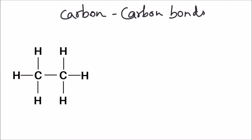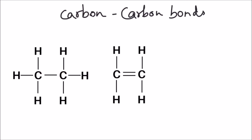In catenation, carbon-carbon bonds can be formed by a single bond, where one electron is shared between the two carbons, or a double bond, where each carbon shares two electrons with the other carbon. There is also the possibility of sharing three electrons, forming a triple bond.